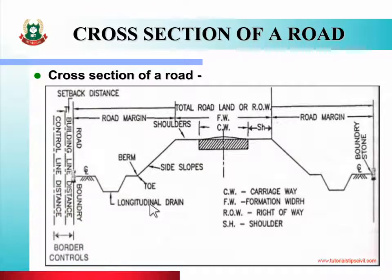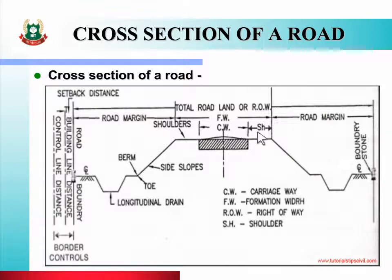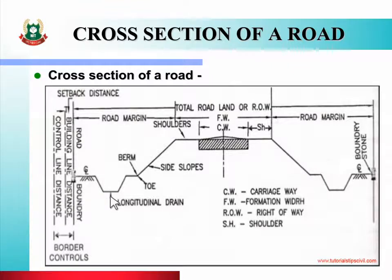See the picture of the cross section of a road. In this figure you can see the carriage way, formation width, shoulder, side slope, side drain, and boundary stones.